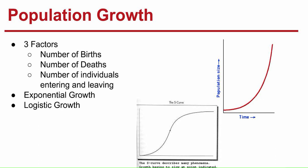When the number of births is greater than the number of deaths, the population grows. When the number of deaths is greater than the number of births, the population sinks. The individuals entering and leaving is also known as immigration — the movement of individuals into a population — and emigration, the movement of individuals out of a population.